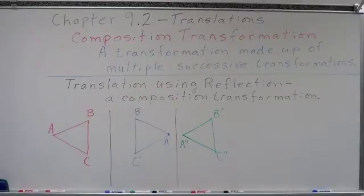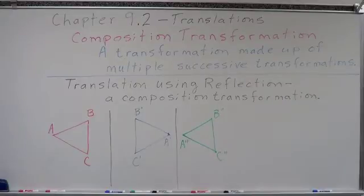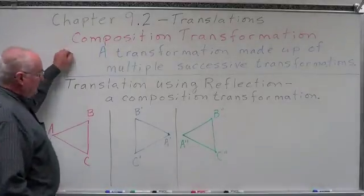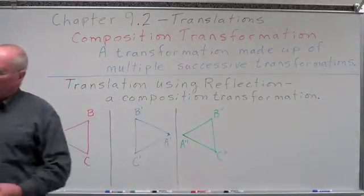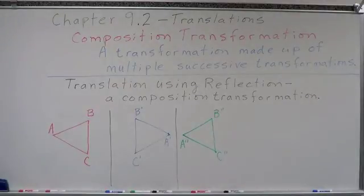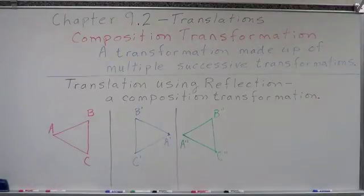The last thing we want to cover on translations is a different type: composition transformation. We talked about applying a rule across a coordinate grid and discovering rules from two figures. Now, a composition transformation is a transformation made up of multiple successive transformations — one after another. Those successive transformations can be reflections, translations, rotations, or even dilations.